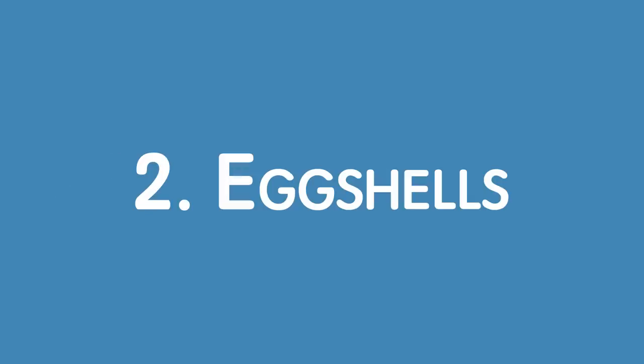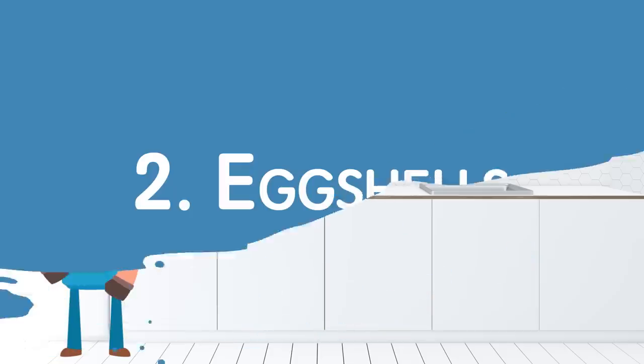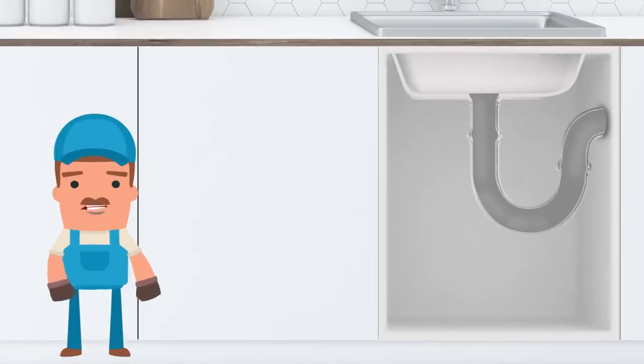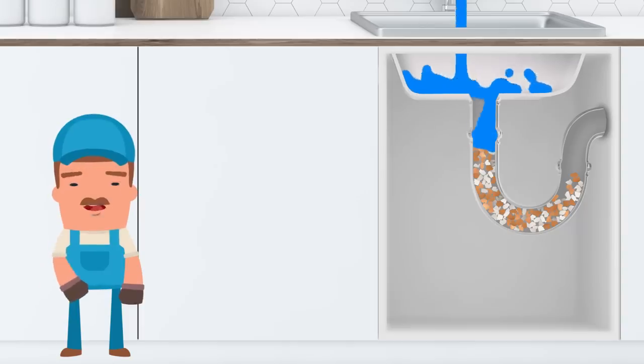Number 2. Eggshells. People think that if you break an eggshell into little pieces, it won't get stuck, but that's not true. The pieces can get stuck to each other and form one big massive hunk over time. This, again, can lead to a clog.